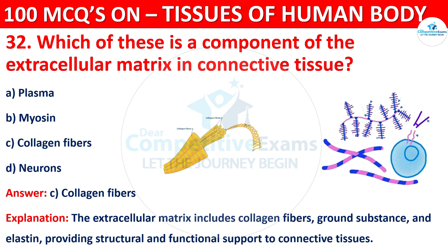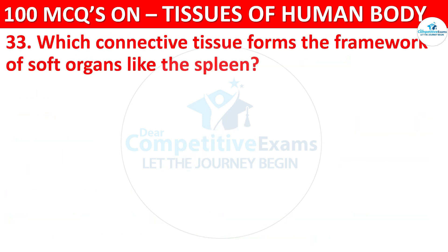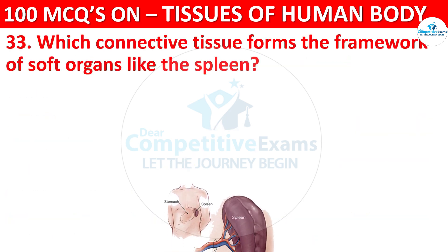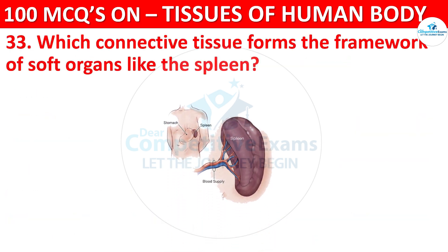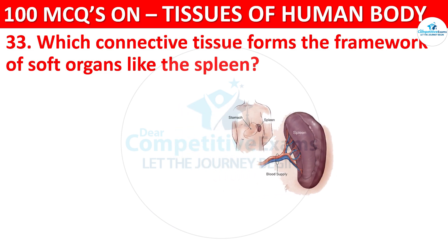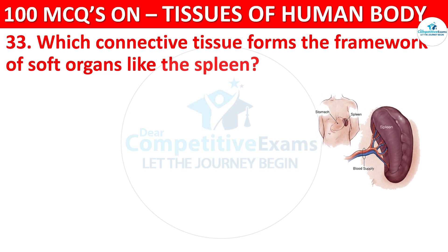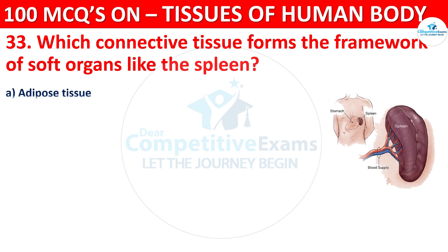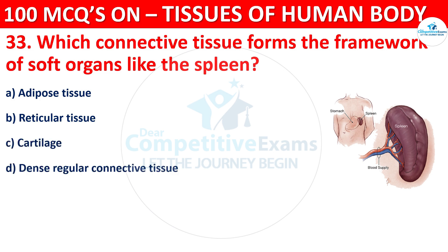Question number 33. Which connective tissue forms the framework of soft organs like the spleen? Options are Adipose Tissue, Reticular Tissue, Cartilage, or Dense Regular Connective Tissue.